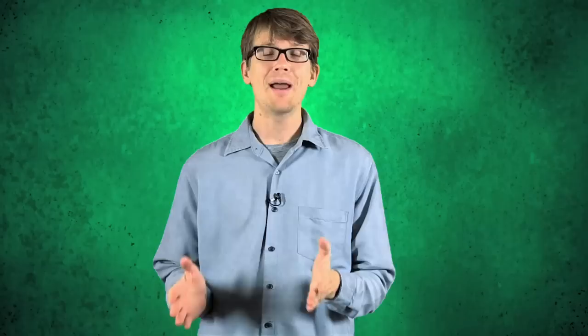Since then, Blackburn has become one of the foremost authorities on the biology of life and death itself. Blackburn was raised in Tasmania as the second of seven children whose mother, father, aunt, and uncle were all family physicians.